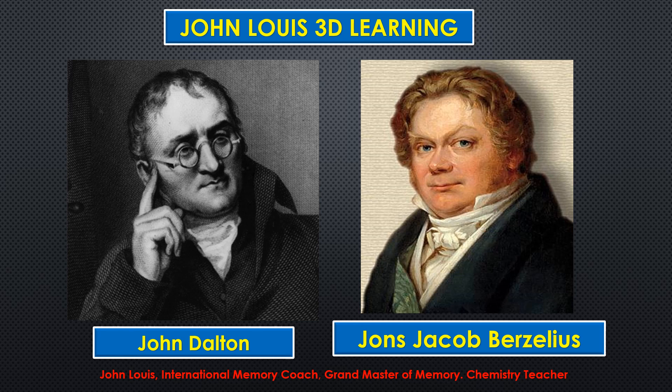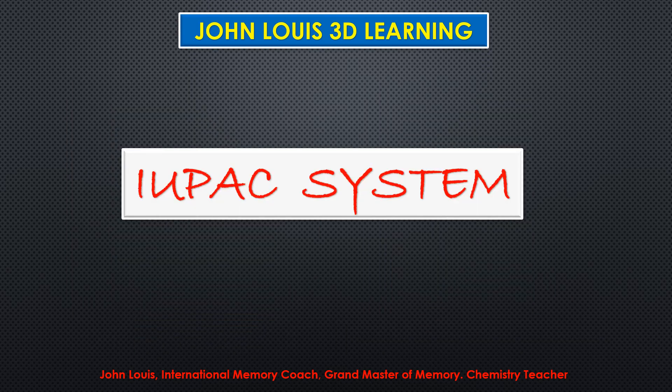John Dalton and Jöns Jacob Berzelius developed shorthand symbols for all the elements. When Dalton started, there were around twenty elements; when Berzelius gave symbols, there were hardly thirty. Today there are 118 elements. They paved the way for a systematic method, which is now known as the IUPAC system — the International Union of Pure and Applied Chemistry.